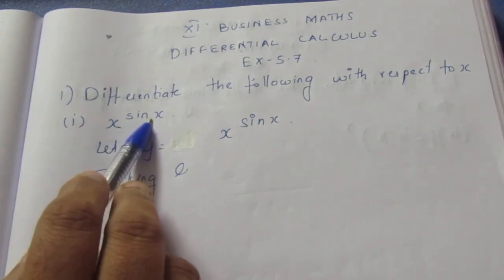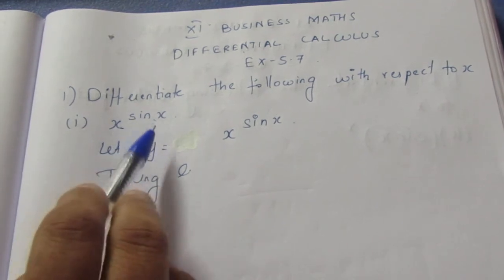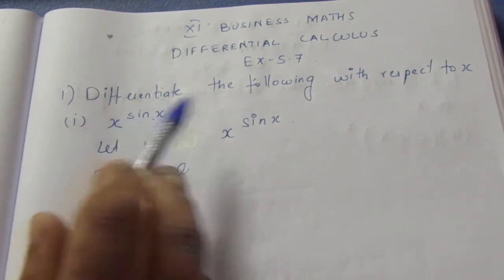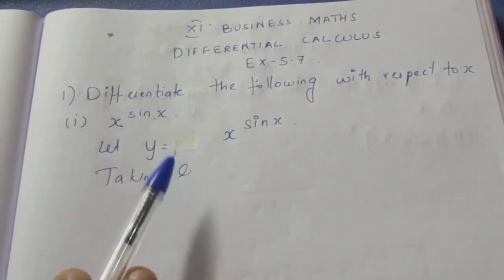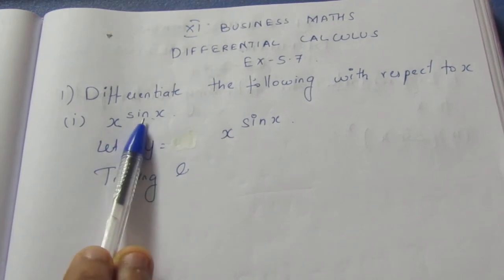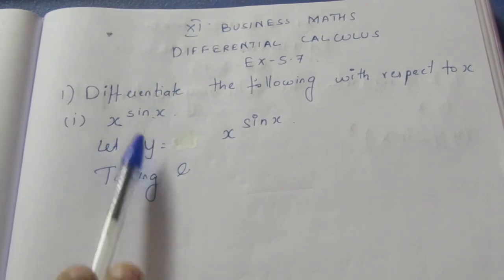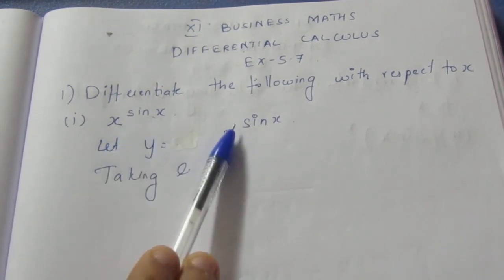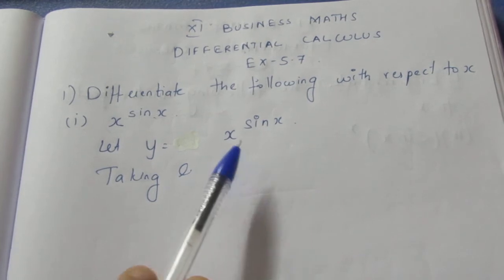We can't directly apply the product rule here. So we will use logarithmic differentiation. We write y is equal to x power sin x.